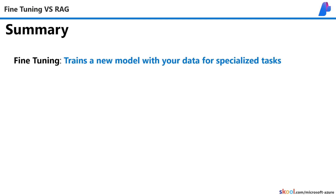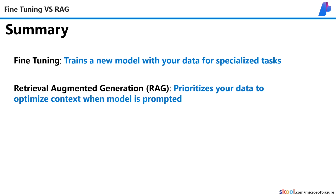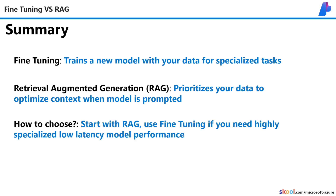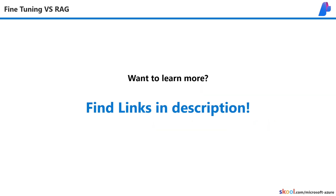To summarize, fine-tuning trains a new model with your data for specialized tasks. RAG prioritizes your data to optimize context when your model is prompted. You should always start with RAG when building an AI app until you realize that you need highly specialized, low-latency model performance. If you want to learn more, you can find links in the description. Let me know in the comments if you have any questions and I'll answer them as soon as possible. Thank you so much and I'll see you in the next one.